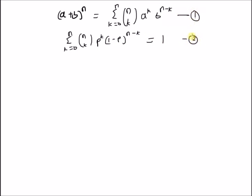We want to use this fact to prove the binomial theorem — basically, we want to derive equation 1 using equation 2. Note that here a and b are positive numbers and p is between 0 and 1. So let us start with the RHS of equation 1.